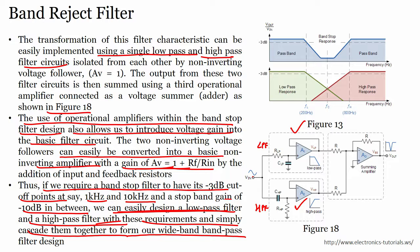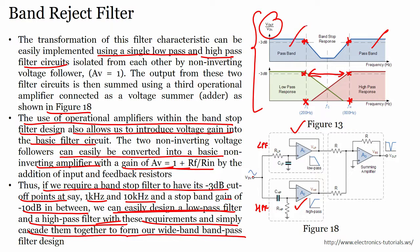Looking at the band stop response plot: the band stop region is between FL and FH — this particular band is not allowed to pass. The minus 3 dB points define the pass bands. Vout/Vin shows the high pass response pass band and the low pass response pass band, with the band stop (reject) region in between. Now we know how to design a band reject filter.